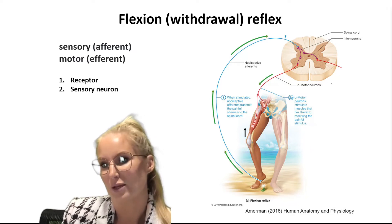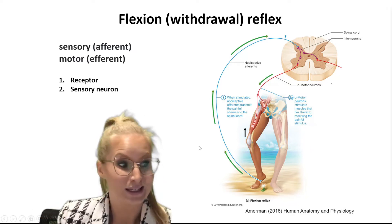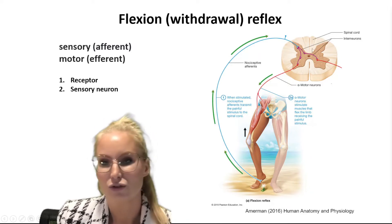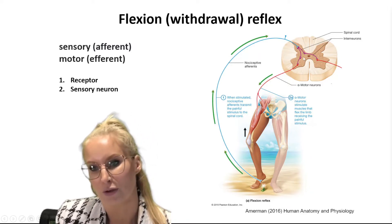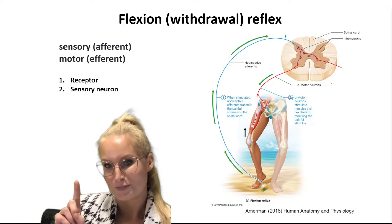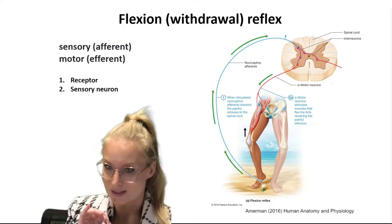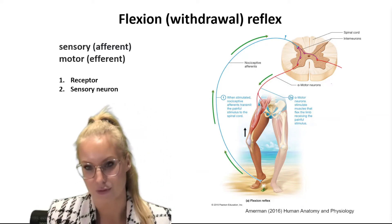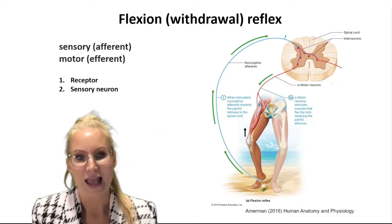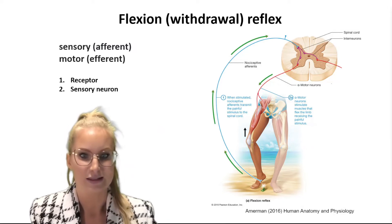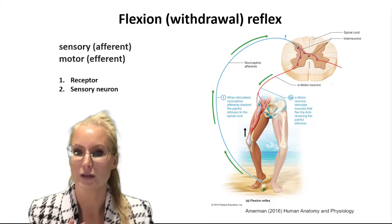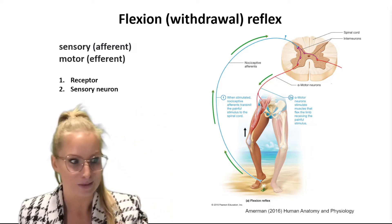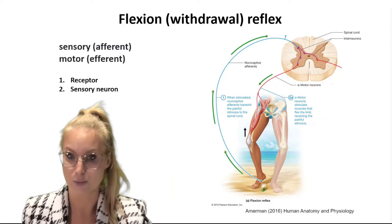Activation of those nociceptors causes the sensory neurons to depolarize and send an action potential all the way up the leg to the spinal cord. So the first component is the receptor — in this case a nociceptor — and the second component is the sensory or afferent neuron, which uses electrical energy in the form of an action potential to send that signal to the central nervous system, specifically this part of the spinal cord.